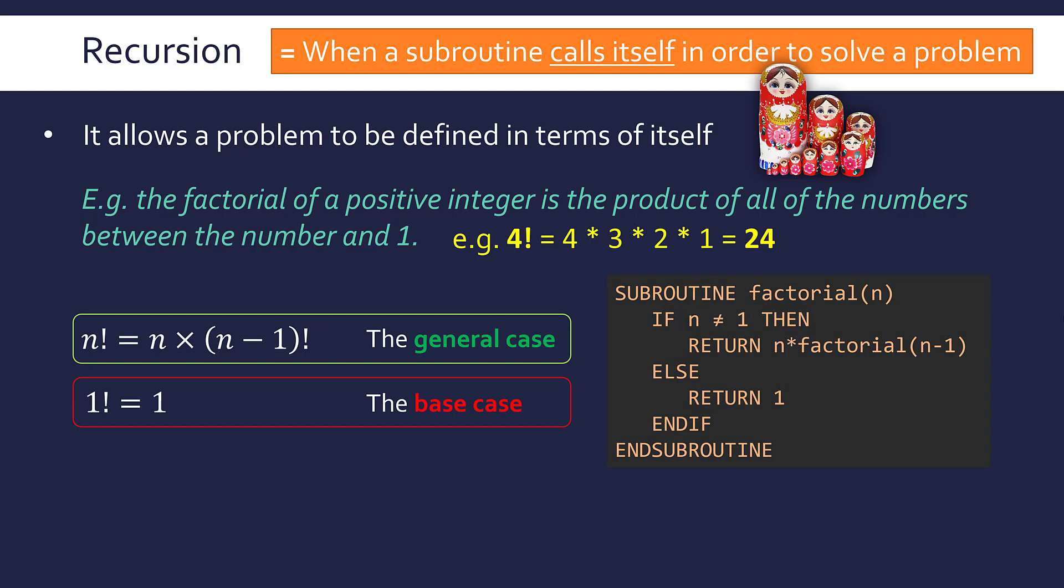If we convert this to code, which we can do very simply, just with if statements, I've stuck it in a subroutine. So I've got a pseudocode subroutine called factorial. It takes in a parameter n, which is our number. So if I stuck in 4 as an argument, it would give us 24 at the end. And you'll notice there are no loops. We're using it without loops because recursion is an alternative to loops. So we can hopefully see how this connects up.